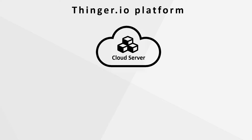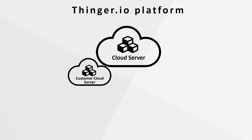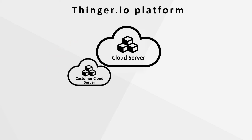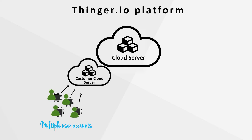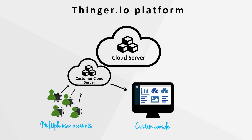That's not all. With Thinger.io you can create a server instance hosted in a Raspberry Pi, an Ubuntu system, or in Amazon Web Services. By doing this you will be able to create large networks just for you and your clients, and show all your information on a personalized interface with your brand colors, logotype and your own web domain.